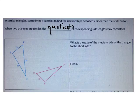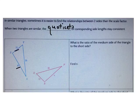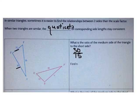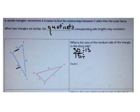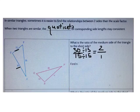What's the ratio of the medium side of the triangle to the short side? I can see that the medium side of the triangle I know is 30 and the short side is 15. So I can write that as 30 over 15. I can simplify that ratio. The greatest common factor is 15. 30 divided by 15 is 2, and 15 divided by 15 is 1. So the ratio is 2 to 1.